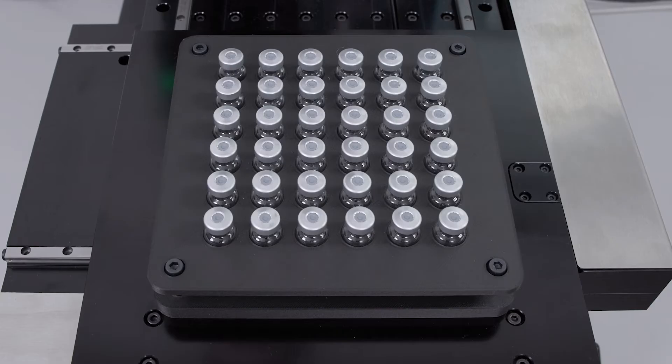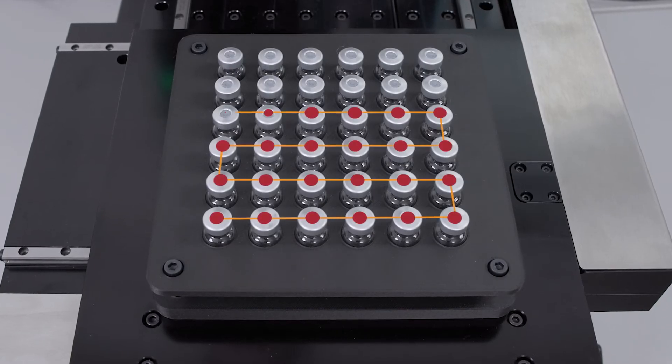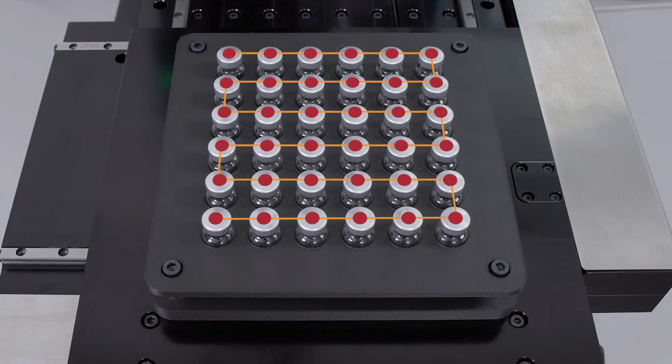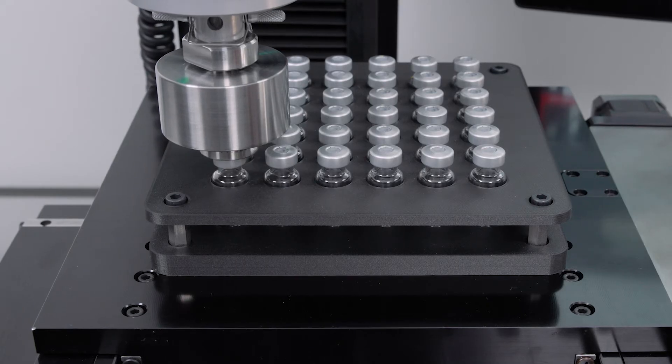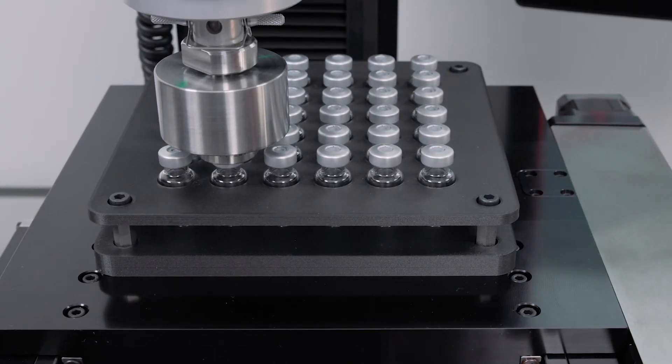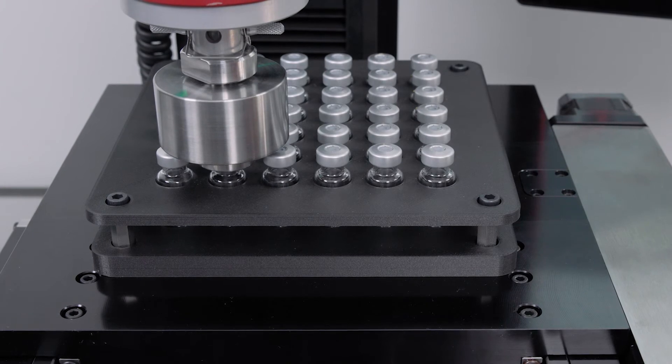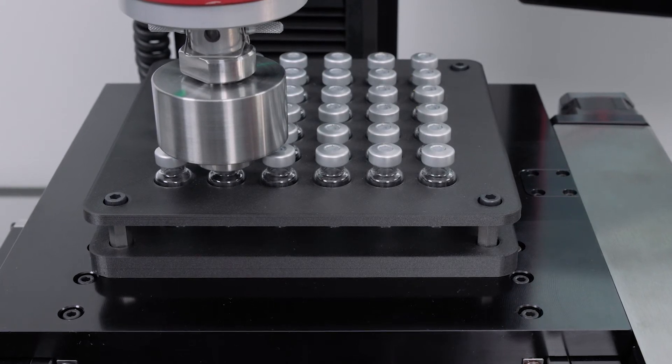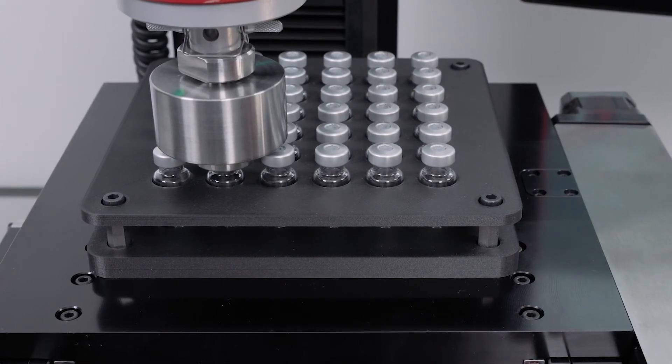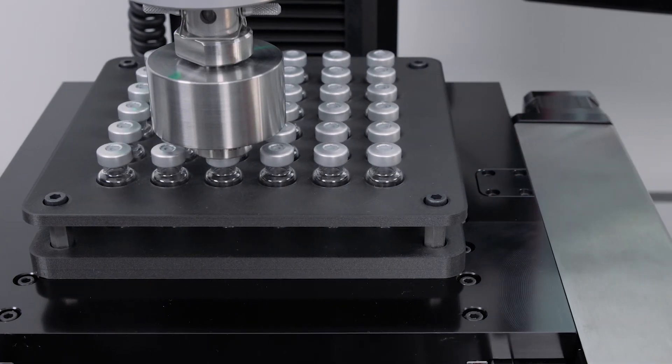Blue Hill Universal is used to program a simple grid sequence to identify the 36 test locations. This sequence is stored in the test method, prompting the XY stage to move to the next location before performing an identical compression residual seal force test on each vial in our batch.